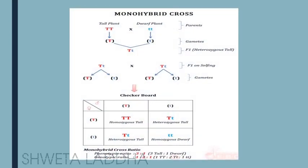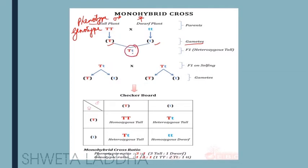Let us see one example of a monohybrid cross. We are obtaining a cross between two pure parents — one pure for tallness (phenotype: tall, genotype: capital T capital T) crossed with another parent whose phenotype is dwarf (genotype: small t small t). The gametes produced are capital T and small t respectively. If they undergo hybridization by emasculation as Mendel did, in F1 generation we get capital T small t — monohybrid, heterozygous, tall. Phenotype is tall; genotype is capital T small t.